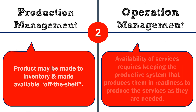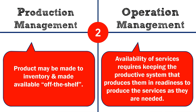The second difference: in production management, a product may be made to inventory and made available off the shelf, but in operation management, availability of services requires keeping the productive system that produces them in readiness to produce the service as they are needed.